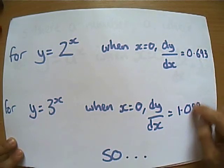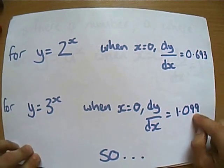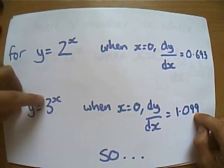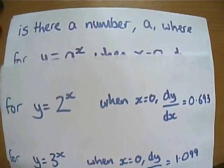And you can guess what's coming up next, can't you? Because you can say, hang on a minute, this is 0.693, this is 1.099, there must be a number somewhere between 2 and 3.